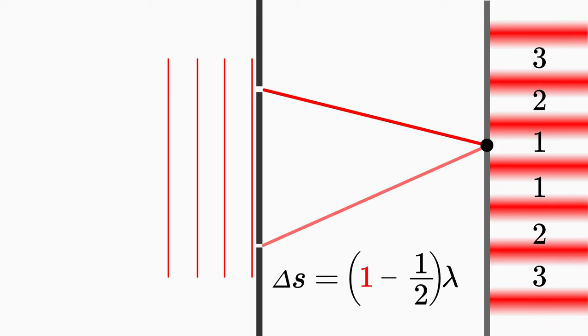On the other hand, if you follow the waves to the dark fringes, you obviously use the condition for destructive interference. In this case, the path difference for the first dark fringe is one half lambda.